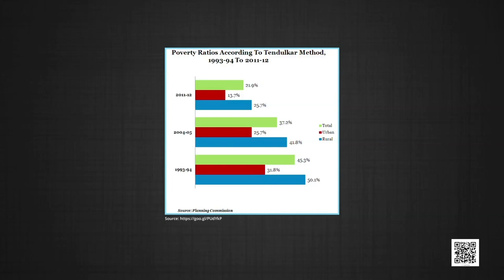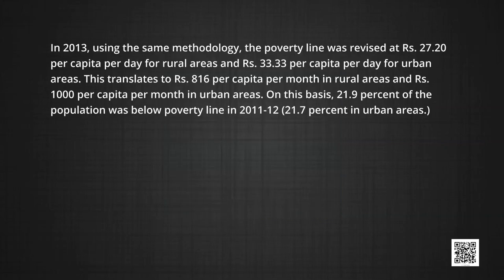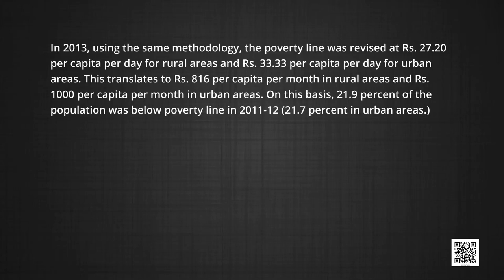For the country as a whole, 37.2 percent of the people were below the poverty line in 2004-05. In 2013, using the same methodology, the poverty line was revised at rupees 27.20 per capita per day for rural areas and rupees 33.33 per capita per day for urban areas. This translates to rupees 816 per capita per month in rural areas and rupees 1,000 per capita per month in urban areas. On this basis, 25.7 percent of the population was below the poverty line in 2011-12, and 21.7 percent in urban areas.